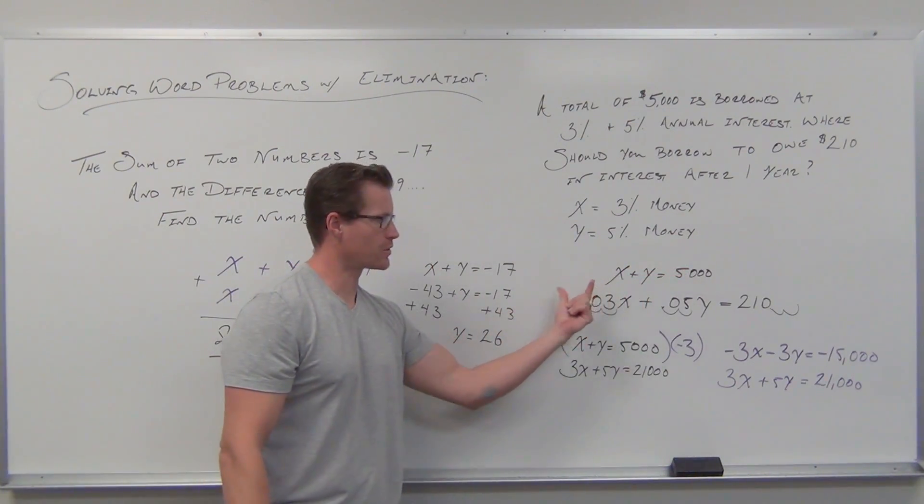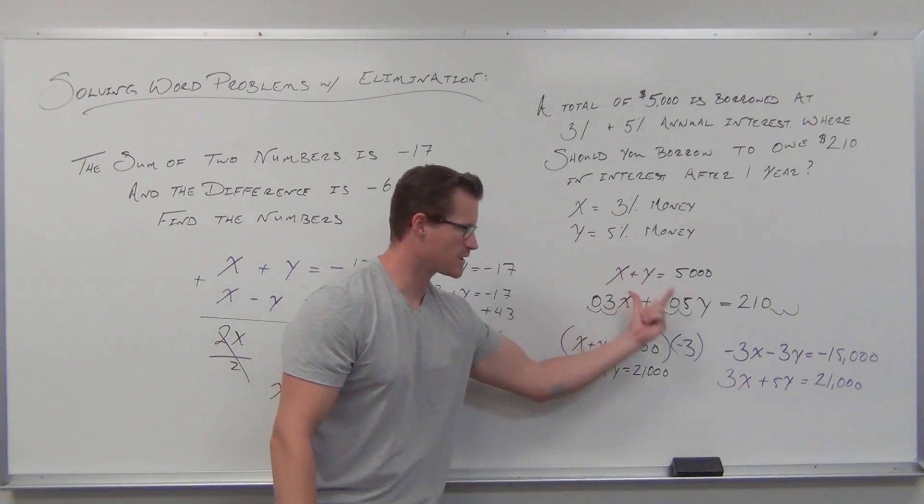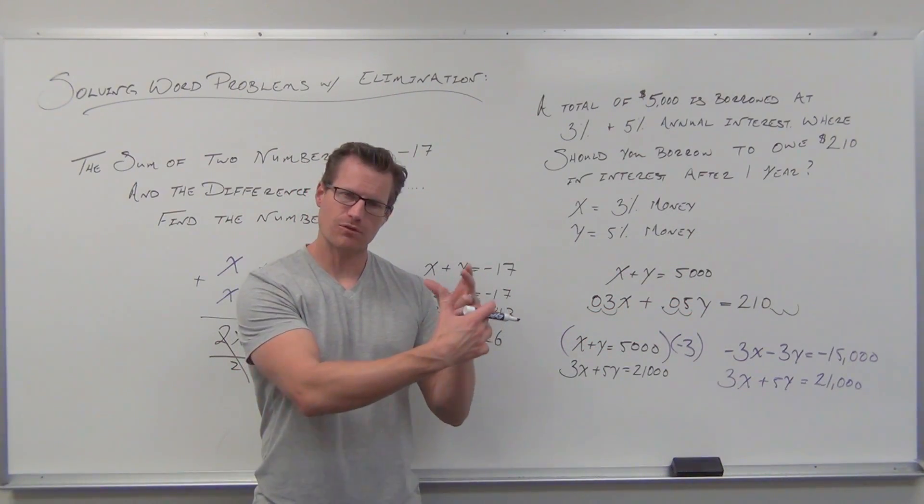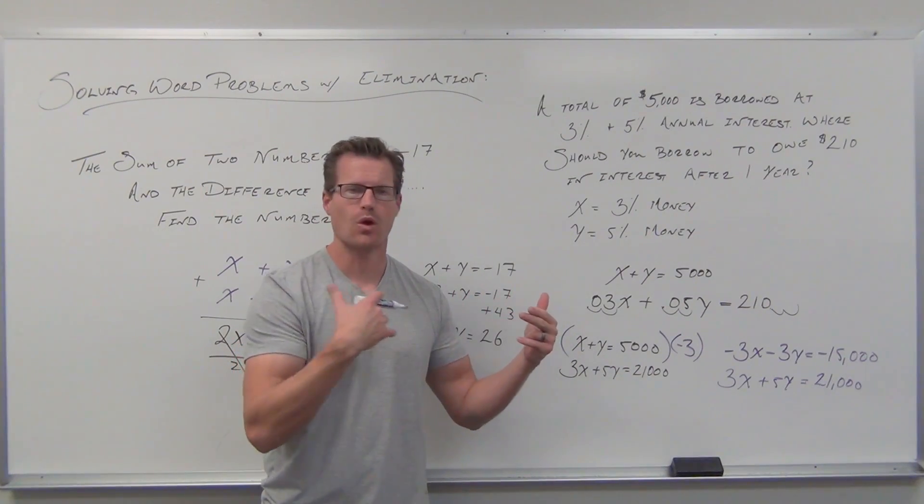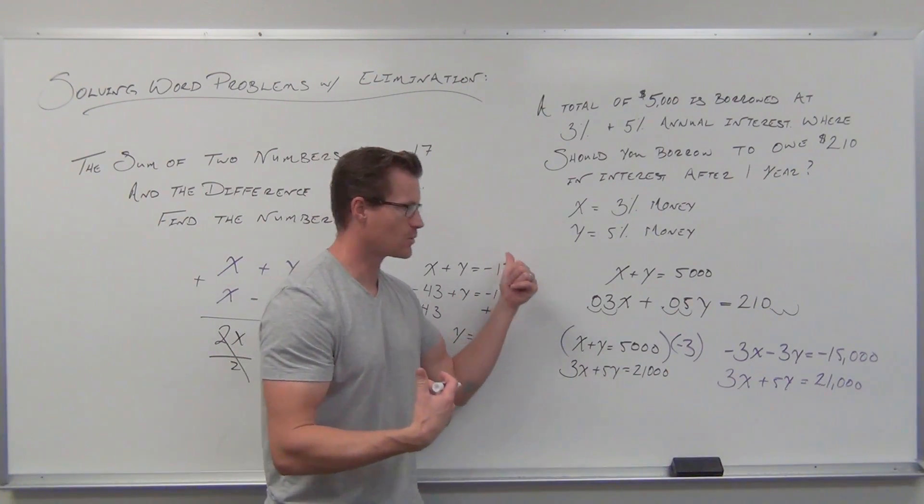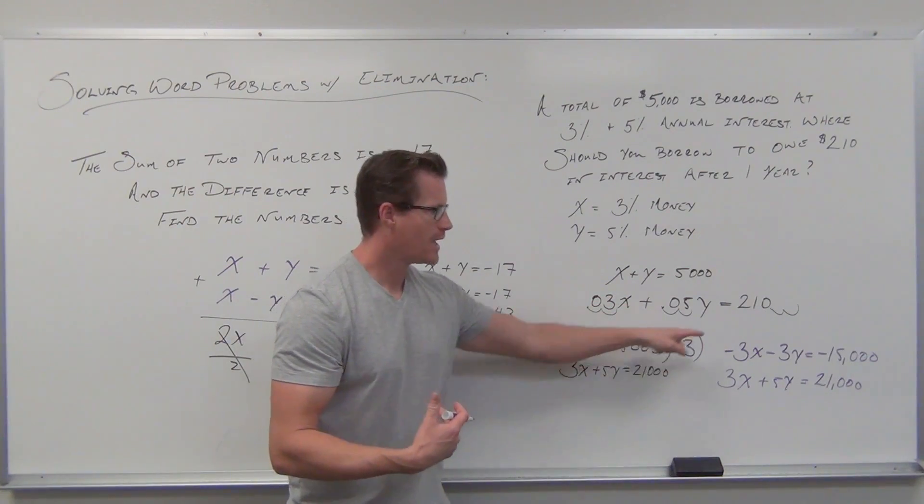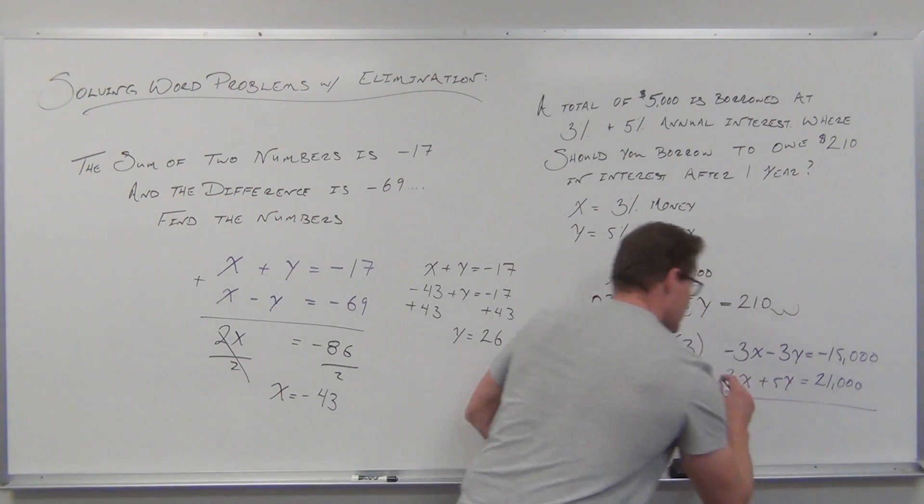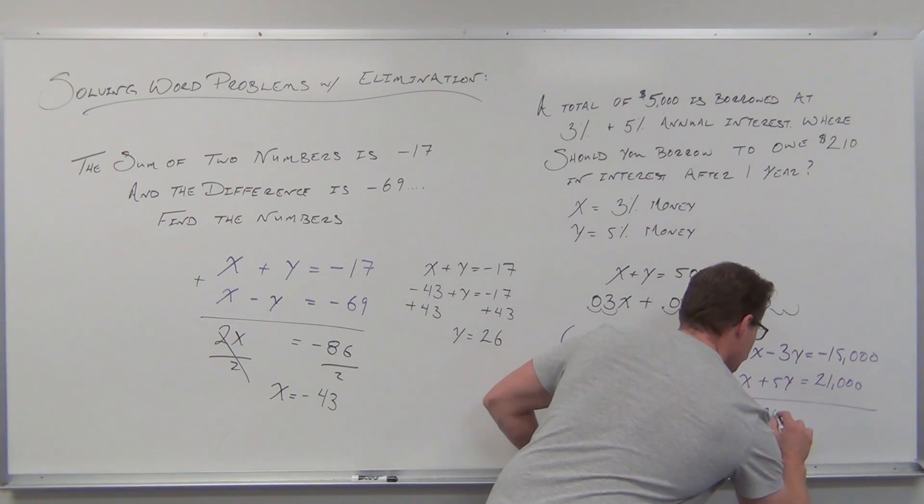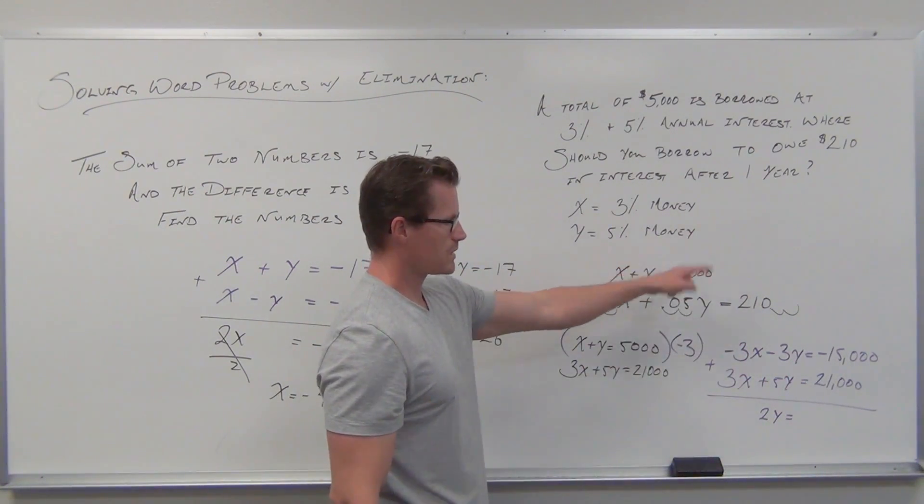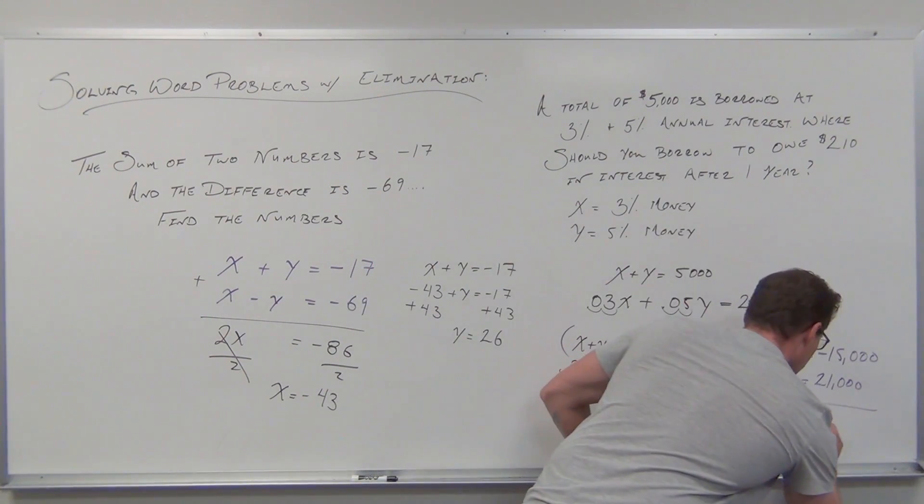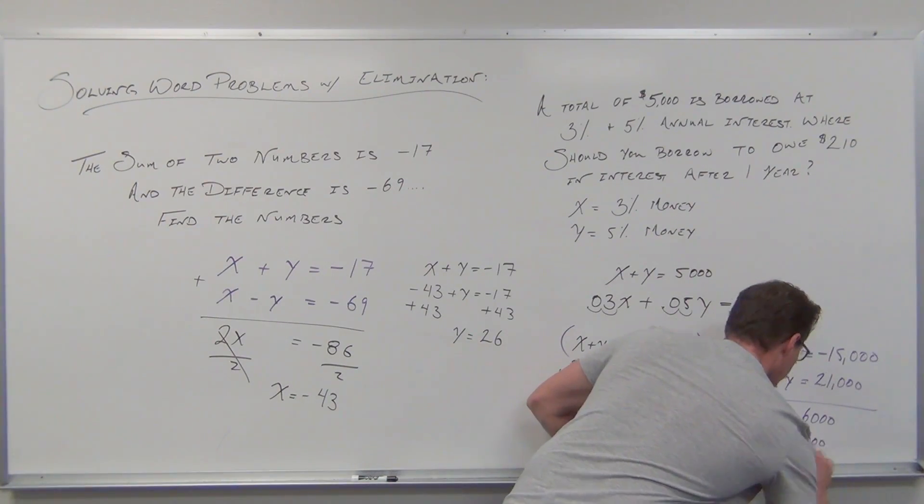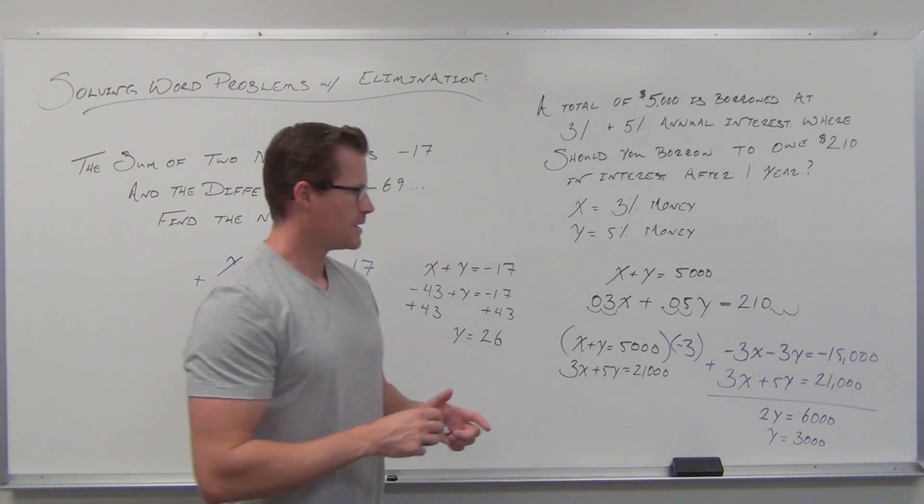We set up our equation. We know the total adds to 5,000 and 3% of x plus 5% of y equals 210. That creates a system solved by elimination. We've got opposite terms. If we add the system, 2y equals 6,000. Dividing by 2, we get y = 3,000.